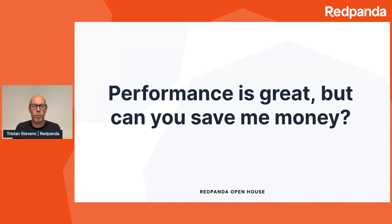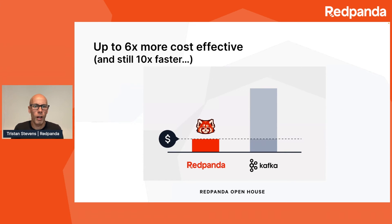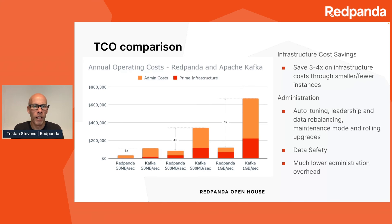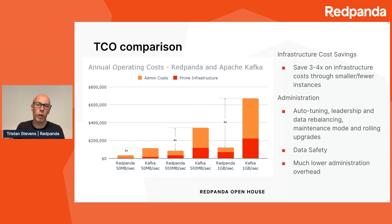Performance is great, but can we save you money? Good news: yes. The answer is up to six times more cost effective and still ten times faster. Two factors come into play when looking at total cost of ownership. First, infrastructure costs — driven by node count, since we've seen we need to add extra nodes to Kafka to match performance — but also auxiliary nodes running ZooKeeper, which we don't need, nodes running Cruise Control, and nodes running a separate schema registry. All of that is packaged into one binary in Redpanda. Just on infrastructure costs alone we're saving three to four times compared to Apache Kafka.